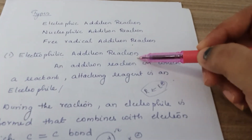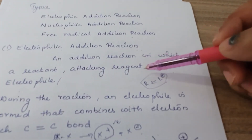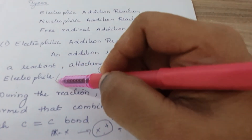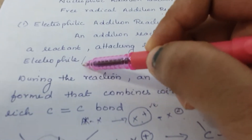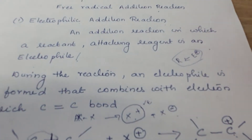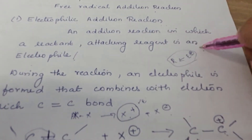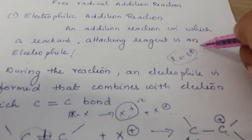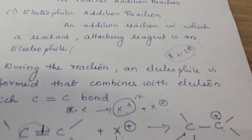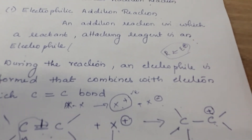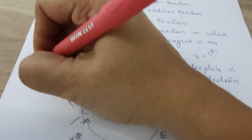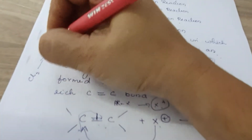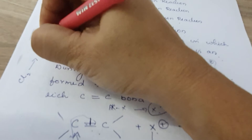Electrophilic addition reaction is a reaction in which the attacking agent is an electrophile. An electrophile is electron deficient. So an addition reaction in which the attacking reagent is an electrophile is known as electrophilic addition reaction. During the reaction, an electrophile is formed first — for example, if you take Cl2, it first converts to an electrophile.